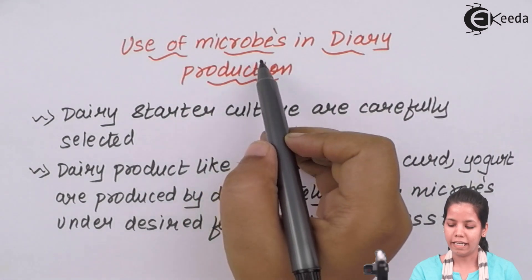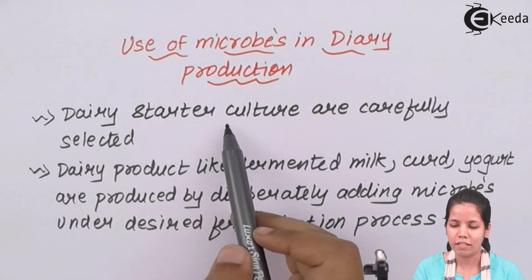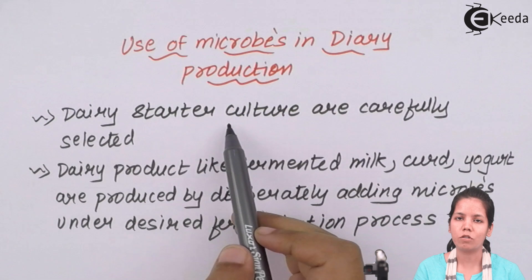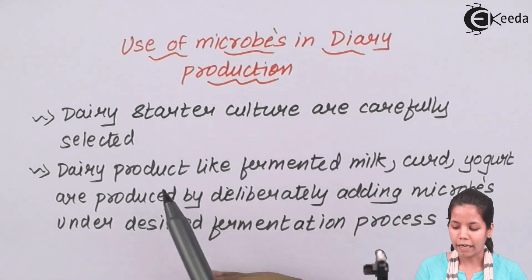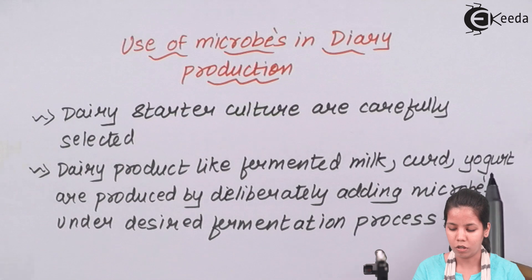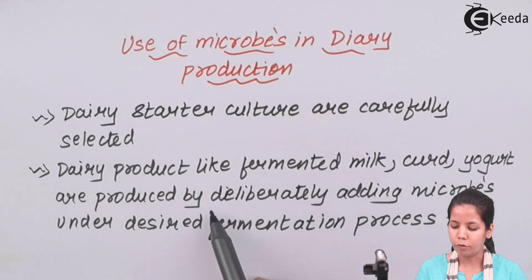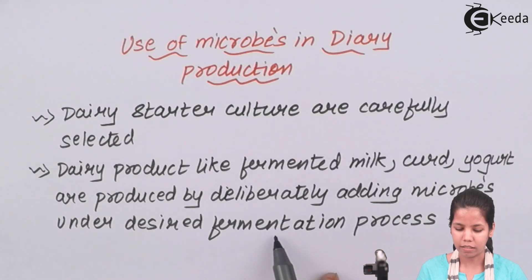Use of microbes in dairy production: dairy production uses starter culture — also called initiation culture — to form all dairy products, whether it is yogurt or fermented milk products. Starter cultures are also termed as inoculum cultures. Dairy products like fermented milk, curd, yogurt, and Greek yogurt are produced deliberately by using microbes under desired fermentation processes.